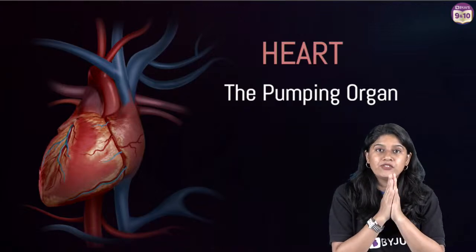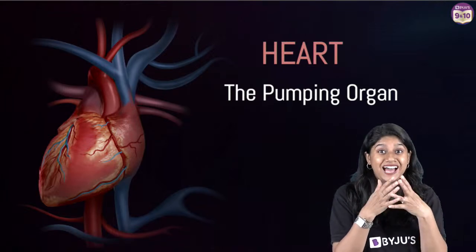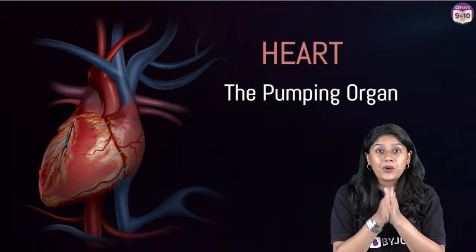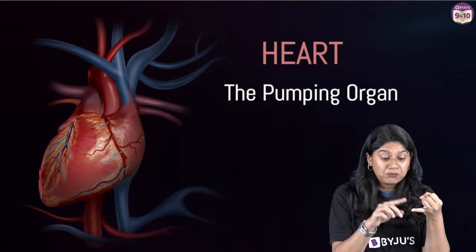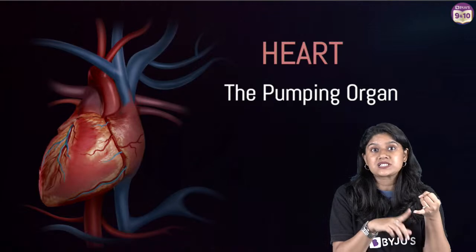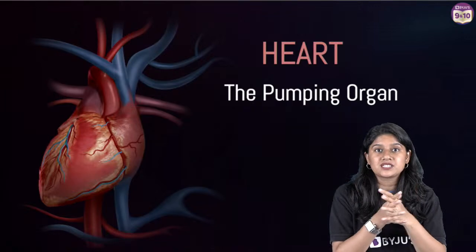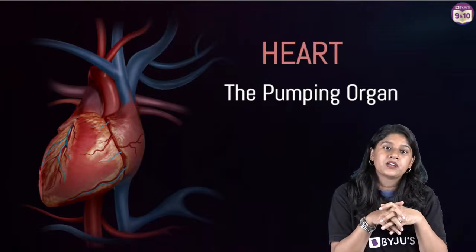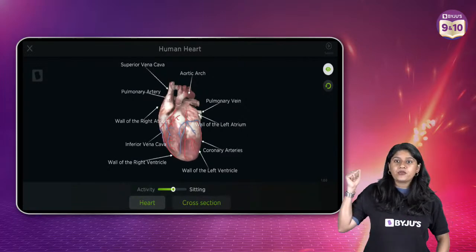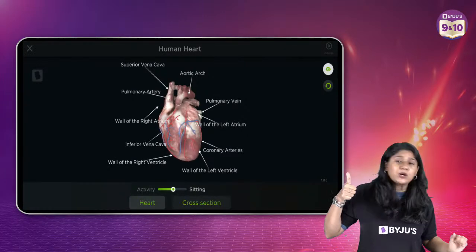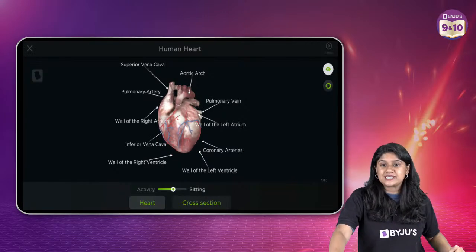Those of you who haven't watched any of the sessions on transportation in animals — please watch the session on blood and blood vessels. The last session we discussed about the human heart, the structure of the human heart. In today's class, we are discussing the double circulation — how the beating of our heart happens. Let's get started without wasting time.